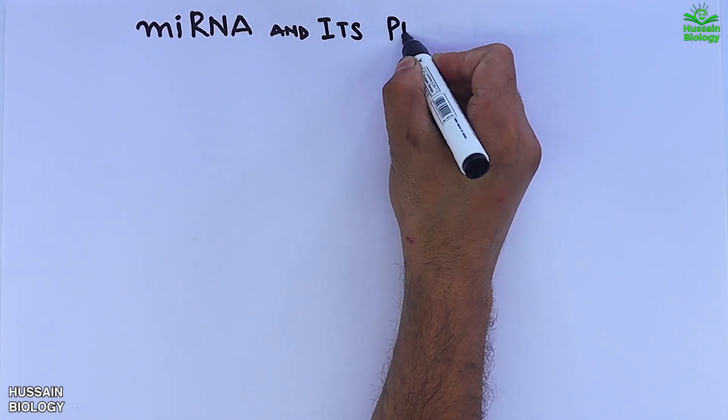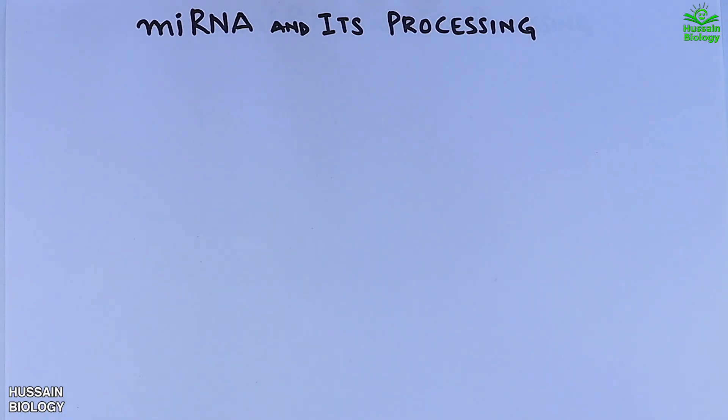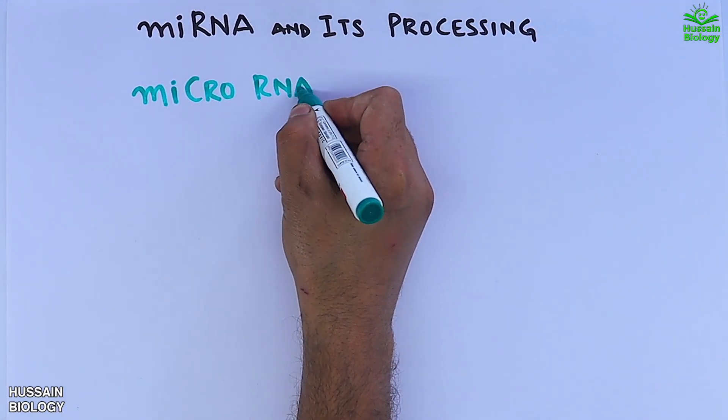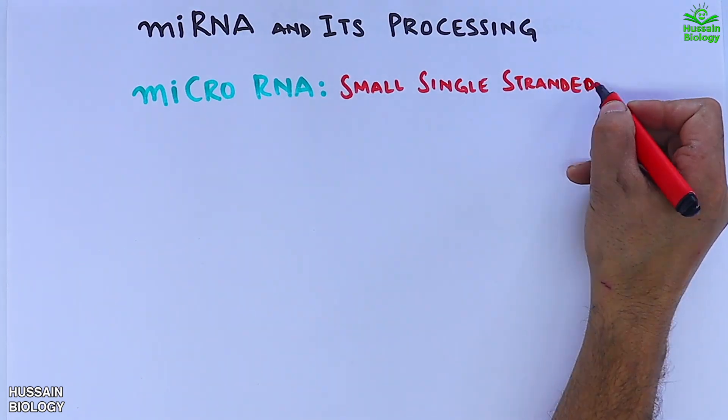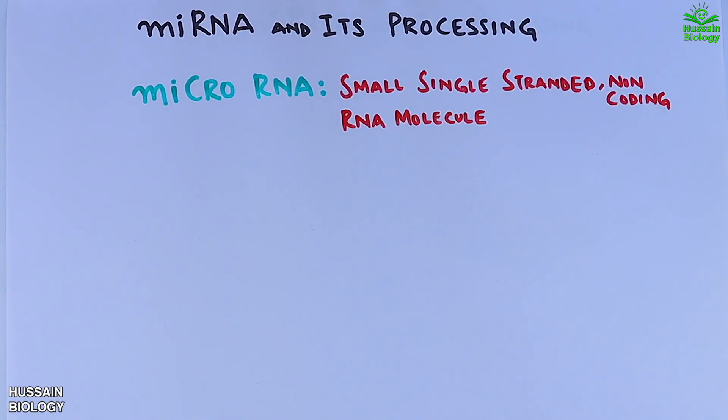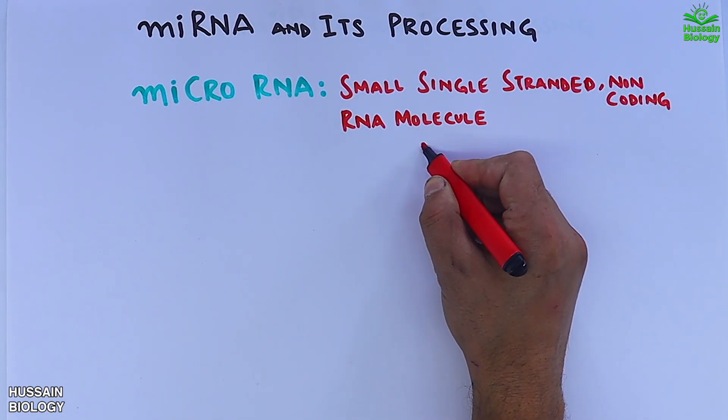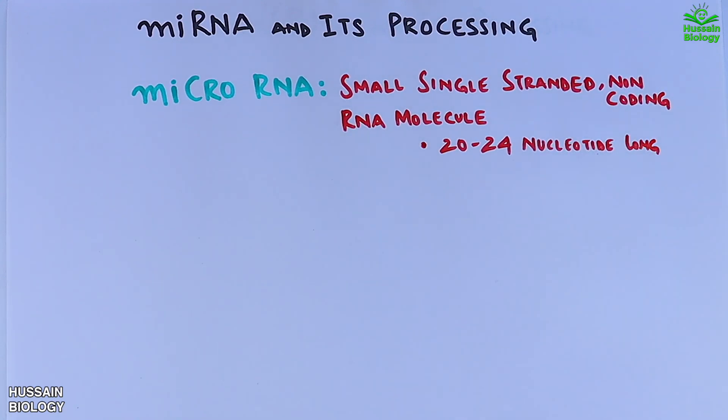In this video we are going to discuss miRNA and its processing. MiRNA, or microRNAs, are small single-stranded non-coding RNA molecules. These molecules are typically 20 to 24 nucleotides long.